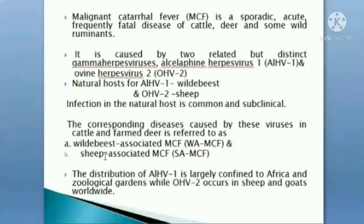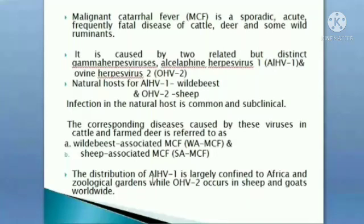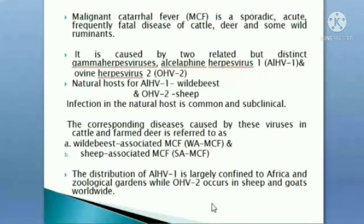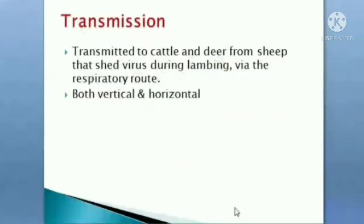The disease in cattle and farm deer is referred to as wildebeest-associated malignant catarrhal fever or sheep-associated malignant catarrhal fever. Alcelaphine Herpesvirus 1 is largely confined to Africa and zoological gardens, while Ovine Herpesvirus 2 occurs worldwide in sheep and goats. Transmission to cattle and deer from sheep occurs via the respiratory route during lambing; both vertical and horizontal transmission can occur.